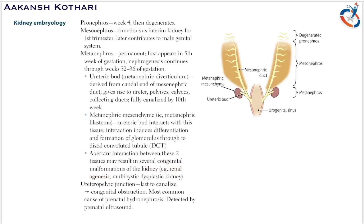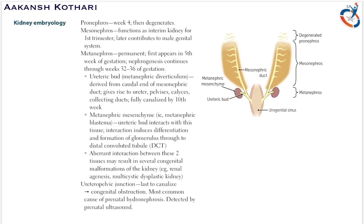These congenital malformations will be covered in the congenital defects of the kidney, but they are basically renal agenesis or multicystic dysplastic kidney. If there is any kind of aberrant interaction, it can lead to congenital defects.